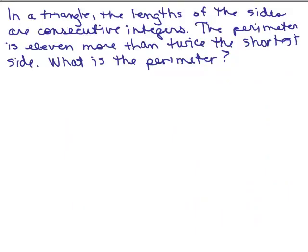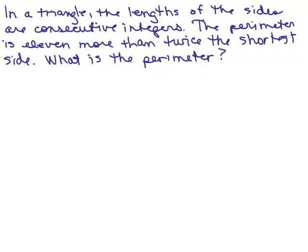All right, we're going to do this puzzle problem. In a triangle, the lengths of the sides are consecutive integers. The perimeter is 11 more than twice the shortest side. What is the perimeter?